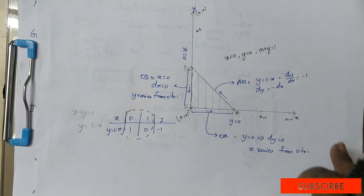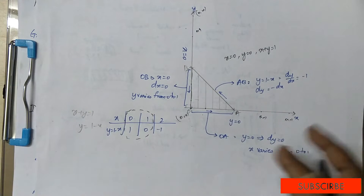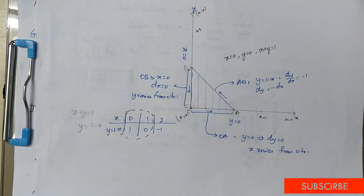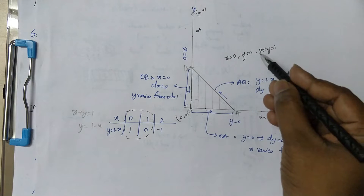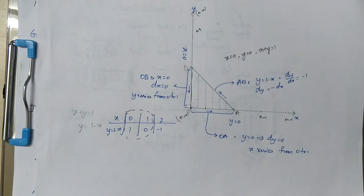That is horizontal — y equal to 0. Vertical — x equal to 0. This is right. If we take the same thing, x plus y is equal to 1.